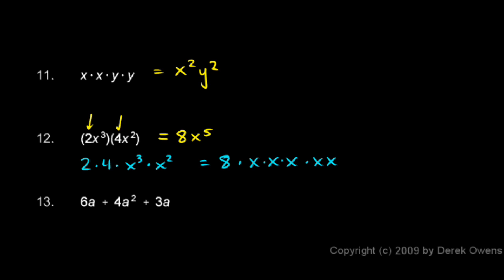But you should be able to go from here to here in one step mentally. You should just say the 2 times the 4 gives you the 8, and then the x³ times the x² gives you the x to the 5th. And you should recognize that you can do that because you can rearrange these. You can take the 2 and the 4 and put them together, and you can take the x³ and x² and put them together because multiplication is commutative. The order doesn't matter. You can rearrange them in your head, do that mentally, and get to the answer in one step.